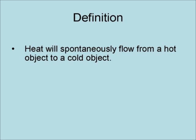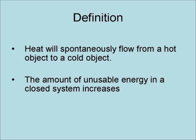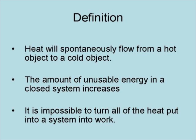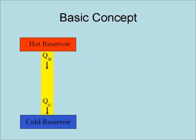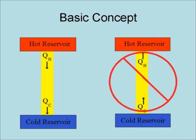According to the second law of thermodynamics, heat will spontaneously flow from a hot object to a cold object. The amount of unusual energy in a closed system always increases. It is impossible to turn all of the heat put into a system into work. The basic concept behind the second law of thermodynamics is the fact that heat always spontaneously flows from hot to cold. It never spontaneously flows from cold to hot.